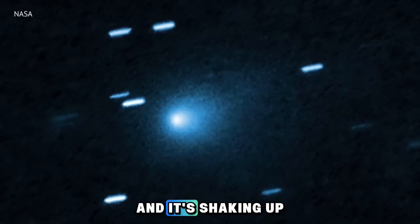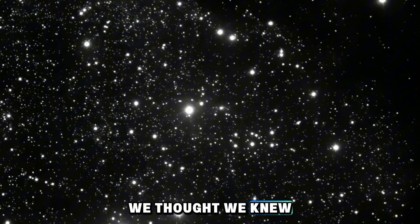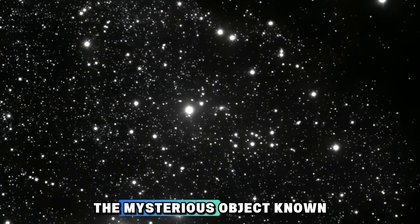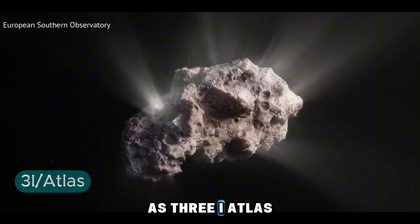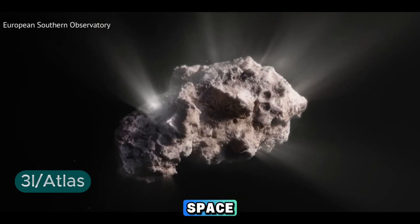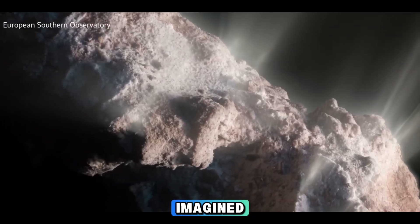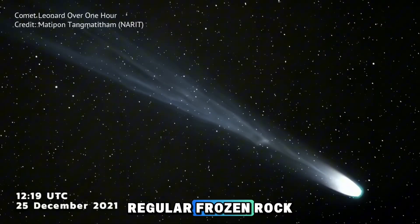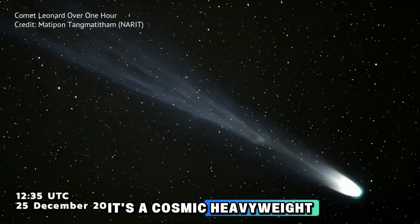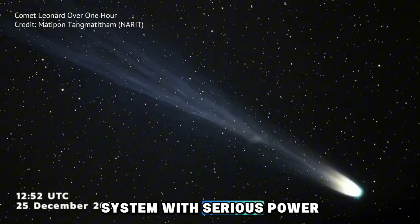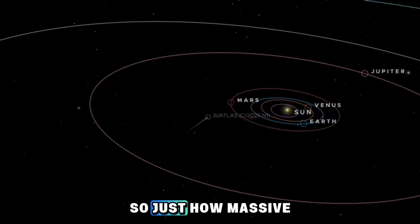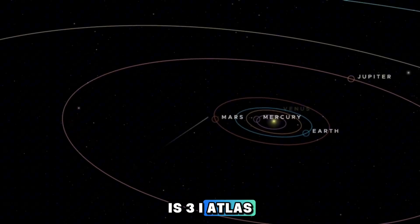New research just dropped, and it's shaking up everything we thought we knew about interstellar visitors. The mysterious object known as 3I Atlas isn't just drifting through space, it's way bigger and heavier than scientists ever imagined. This thing isn't your regular frozen rock, it's a cosmic heavyweight cruising through our solar system with serious power. So, just how massive is 3I Atlas?